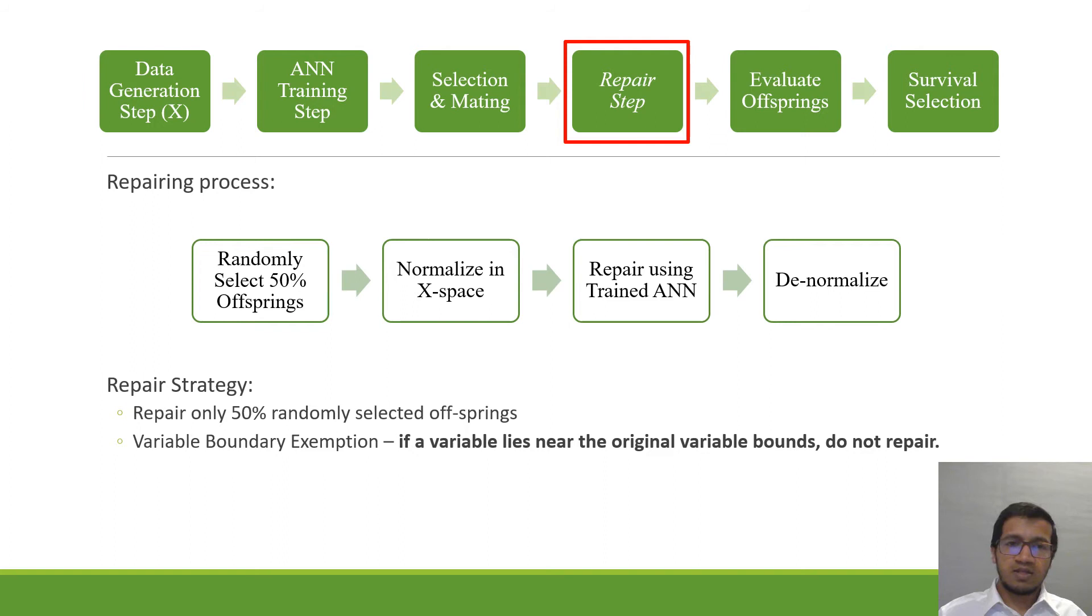Then we move to the repair step in which we randomly select 50 percent of the offsprings that has been generated using selection, mutation and crossover, then we normalize them in the x space using the same bounds that we identified in the previous step. We repair and then we denormalize them back to the original space.